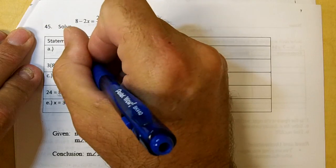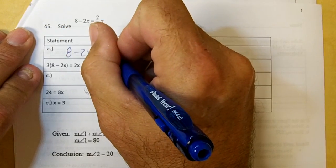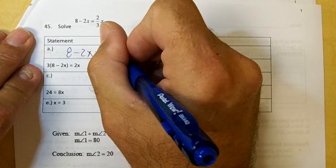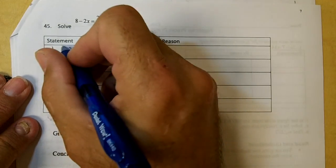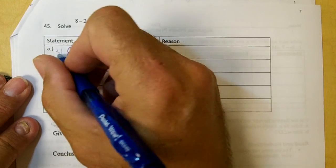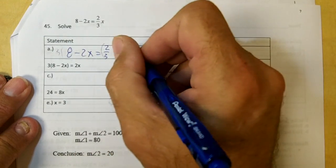So 8 minus 2x equals 2 over 3x. Okay, now then how did they go from here to here? They multiplied everything by 3. They multiplied both sides by 3, right?